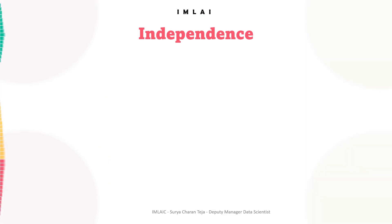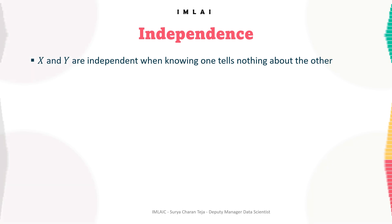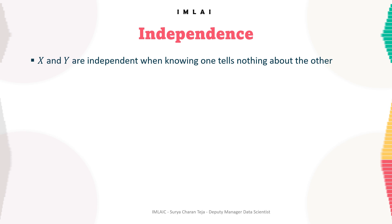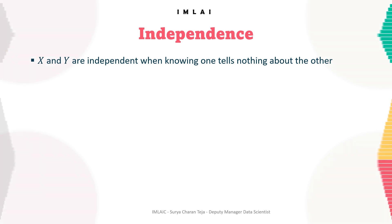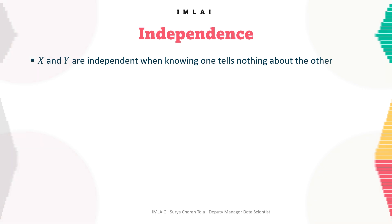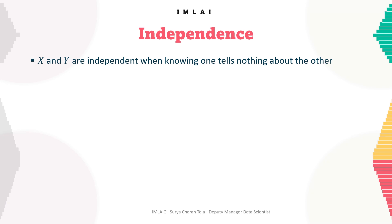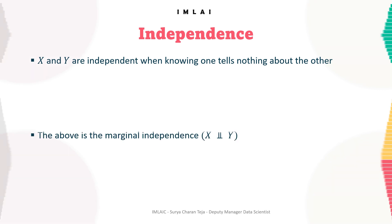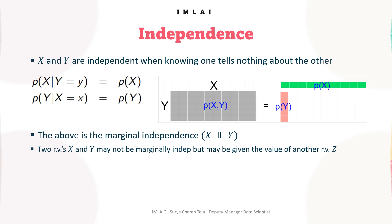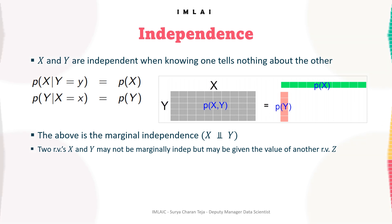Let's look into the independence concept — the independent random variable concept. Two random variables X and Y are independent if and only if their joint probability distribution can be expressed as the product of their marginal probability distributions.